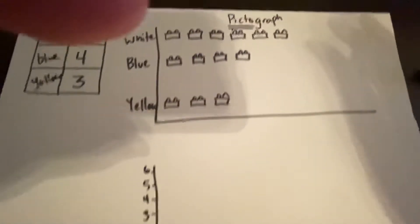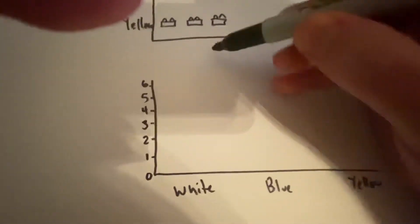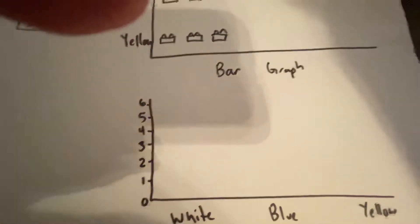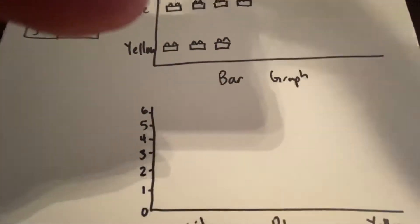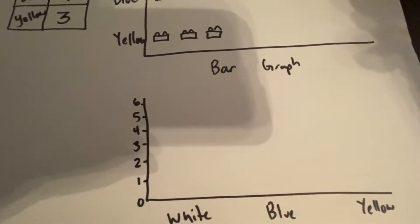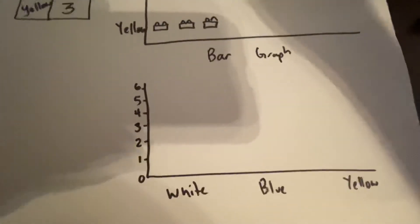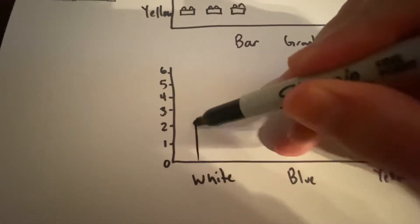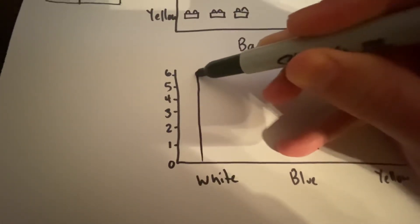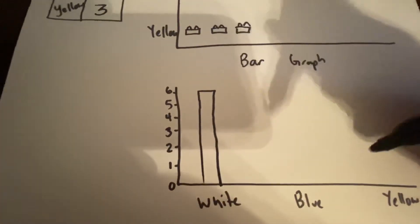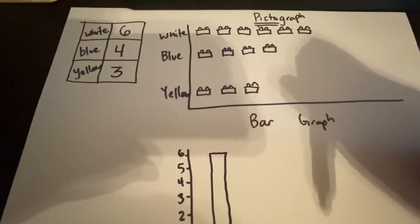Now we can take that same information and set up something called a bar graph. And a bar graph is just like the pictograph. It's going to show the same information. We're going to use rectangles instead of pictures. So for white, I want to start down at the bottom. And I want to go up all the way to the number six